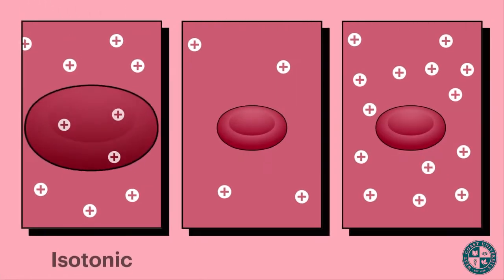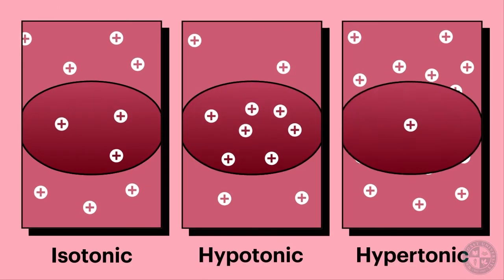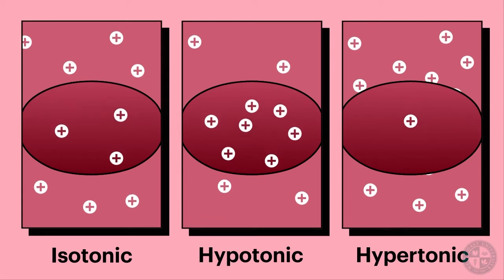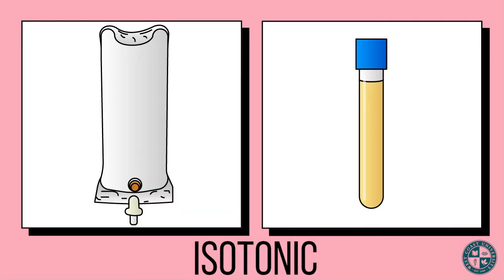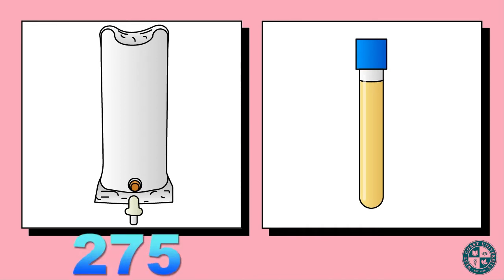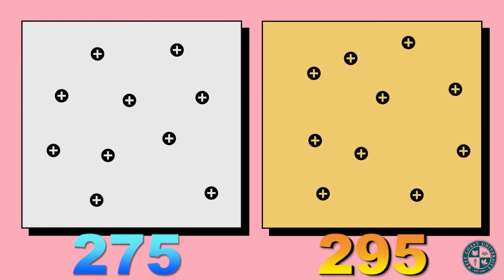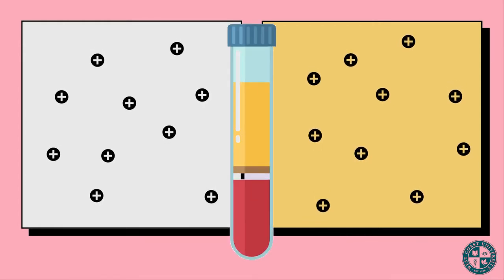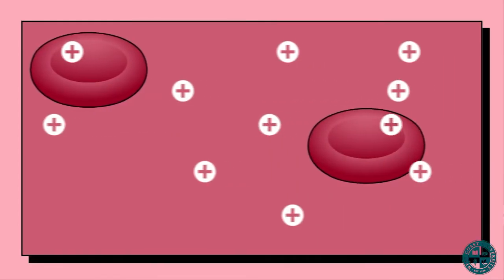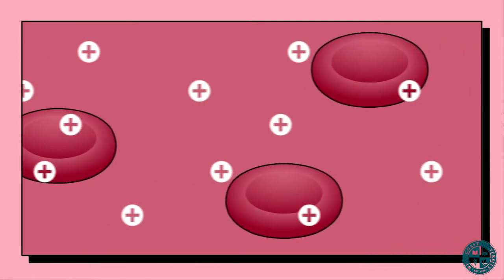Let's talk about the three main types of crystalloids you may be administering: isotonic, hypotonic, and hypertonic solutions. Isotonic solutions have an osmolarity between 275 and 295, which is similar to that of plasma. This type of fluid is distributed in the intravascular compartment without affecting the cell, and these solutions are predominantly used to treat fluid volume deficit.